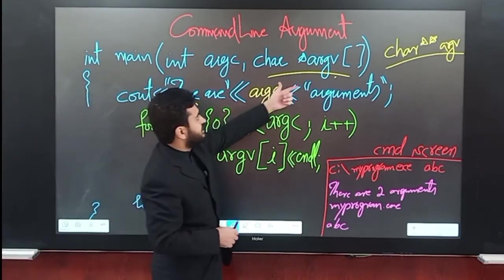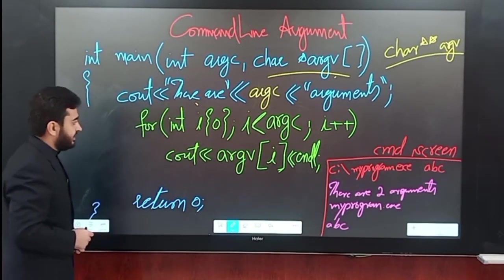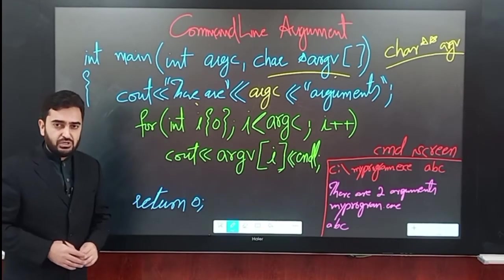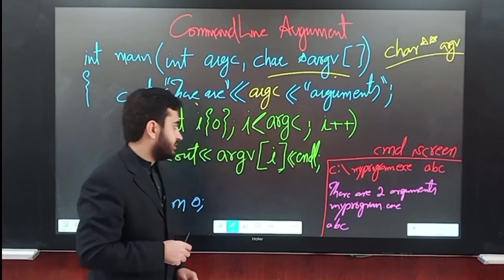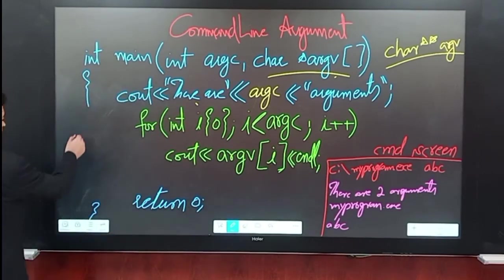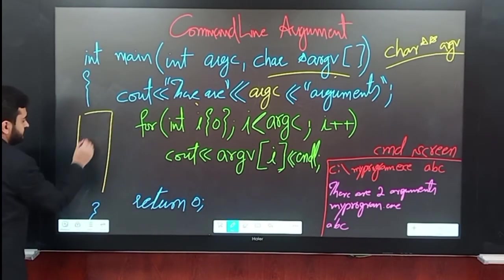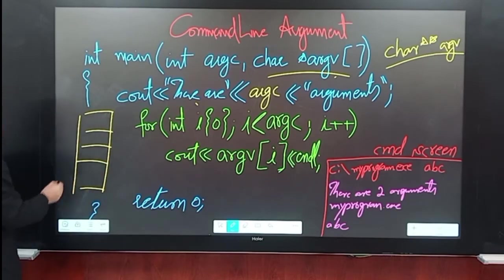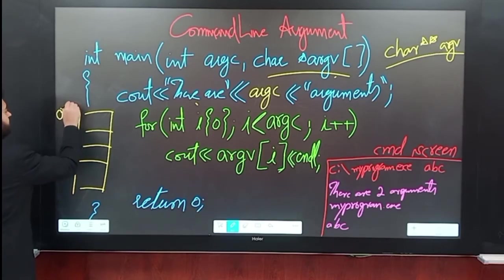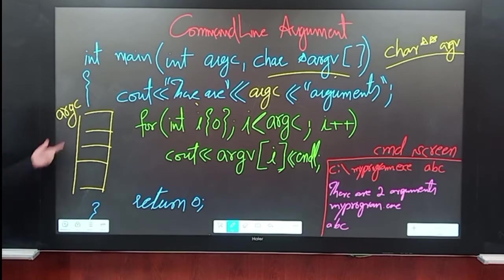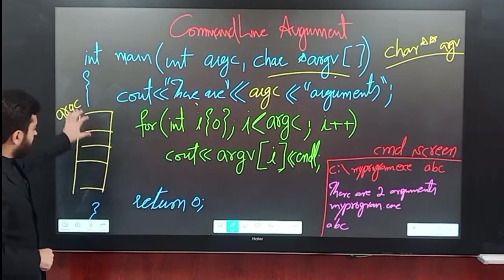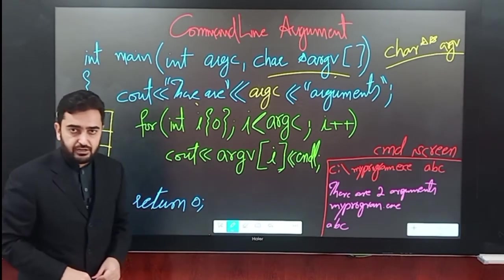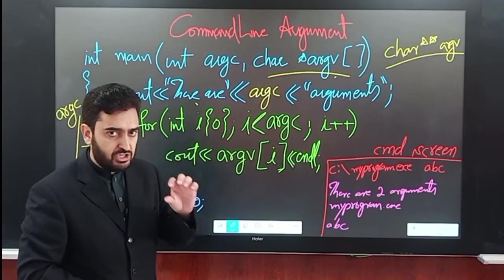The second point is to use the argv variable in our main function. argv is an array where strings are saved at each location — each element holds one string. This array has the size of argc. So if argc is 4, the size of the array will also be 4, and each element of this array will save a string value.